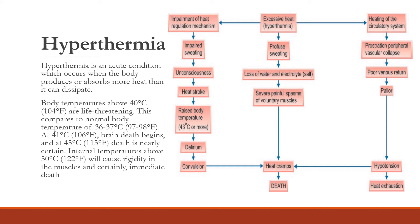Raising temperature to 43°C and above causes delirium and confusion, leading to heat cramps — muscle twitching and painful spasms — which can lead to death in cases of heavy heat sensitivity. The middle pathway shows profuse sweating leading to loss of water, dehydration, and loss of electrolytes, causing severe painful spasms of voluntary muscles — heat cramps. Remember: heat cramps and heat stroke are two key conditions.